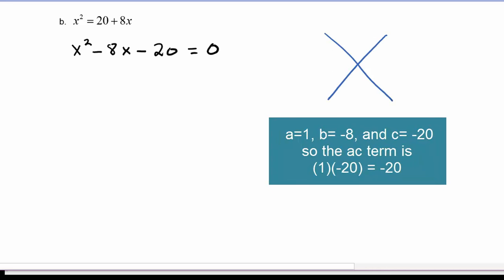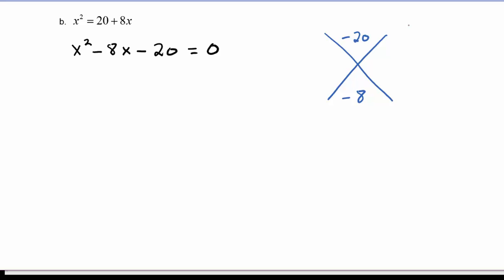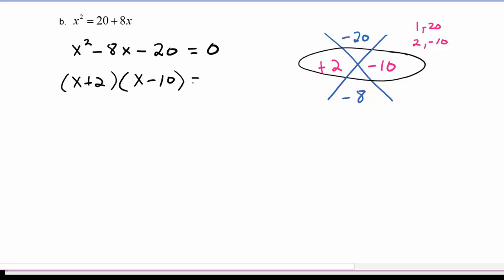So we're looking to factor. We need two numbers that will multiply to be negative 20, but will add to be negative 8. So we start going through the factors of 20. We would have 1 and negative 20, 2 and negative 10. So we have a positive 2 and negative 10 that we want to use. Since the leading coefficient is 1, we can just write these as our factors. So we have x plus 2 times x minus 10 equals 0.